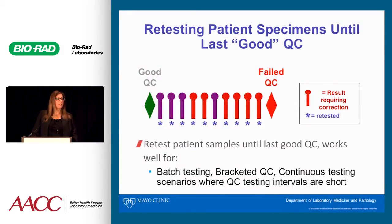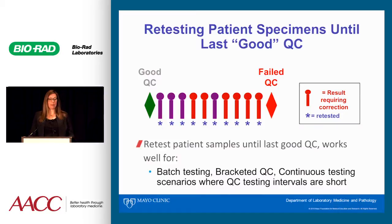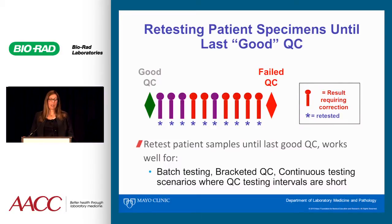Retesting patient specimens until the last good or in-control QC is pretty straightforward. Here I've shown good QC with a green diamond, and the failed QC at the next measurement is the red diamond. In between, each stick figure might represent 2, 10, or 20 patient results. Because we had a QC failure, we've gone back and repeated all of the patient tests, and the red ones are the ones that had to be corrected.